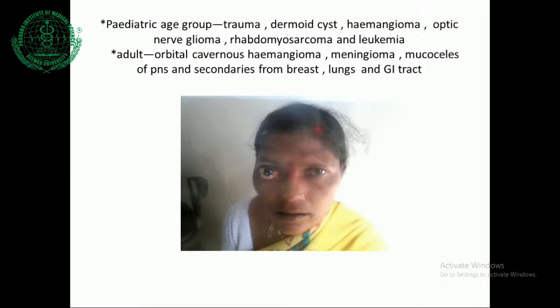In the paediatric age group, commonly seen conditions causing uniocular proptosis are trauma, dermoid cysts, haemangioma, optic nerve glioma, rhabdomyosarcoma, and leukaemia. In adults, the common causes are orbital cavernous haemangioma, meningioma, mucoceles of the paranasal sinus, and secondary spread from breast, lungs, and gastrointestinal tract. This picture shows unilateral axial as well as downward displacement — possibly secondary metastasis or meningioma.